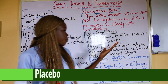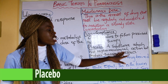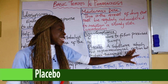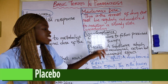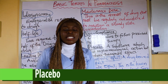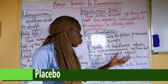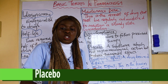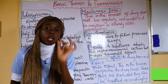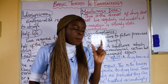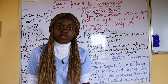So placebo, generally, is a substance which has no pharmacological action but produces therapeutic effects. For example, distilled water — it has no pharmacological action but it tends to reduce pain in someone who believes it will. Whenever you hear placebo, it is simply a substance which has no pharmacological action but produces a therapeutic effect.